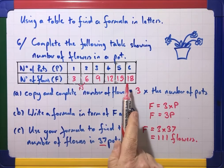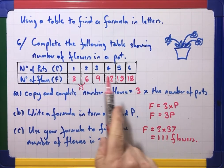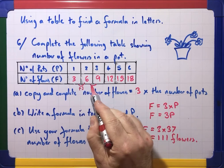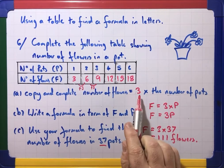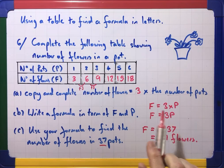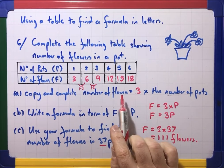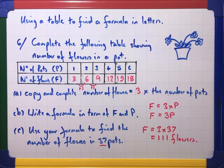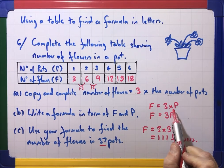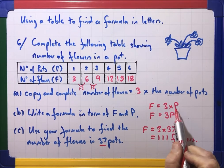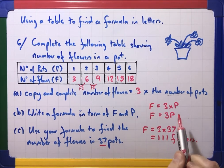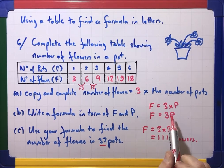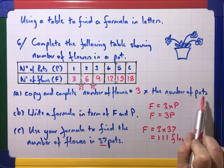So you complete the table unless it's been done for you. What it goes up by each time, because it's going up by the same thing each time, is what we multiply by. And then what we do is we replace number of flowers and number of pots with a letter that we've either been given or chosen for each. And then lastly we remember with the formula that we don't need a times. So three times P in algebraic notation we write just as 3P. So F equals 3P is just a much shorter way of writing that.